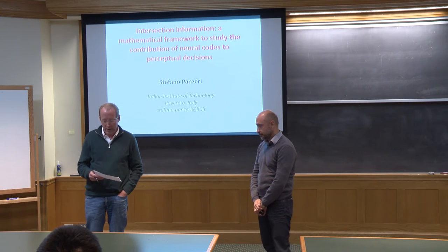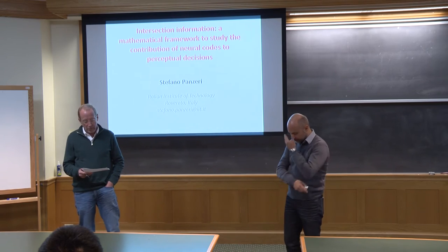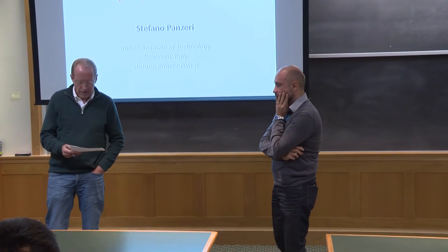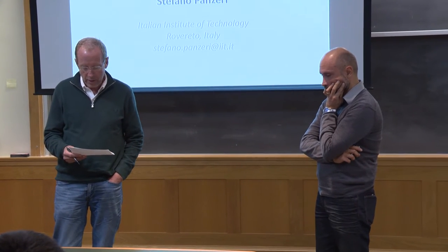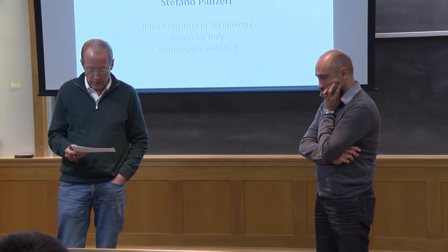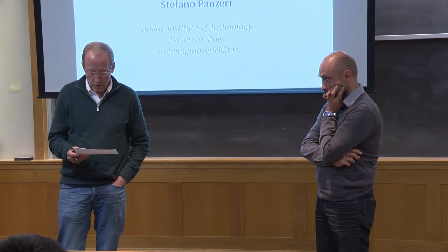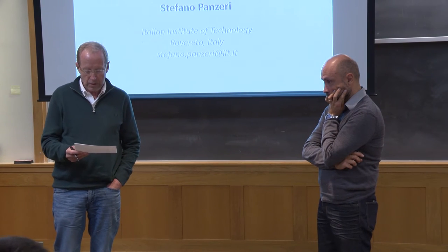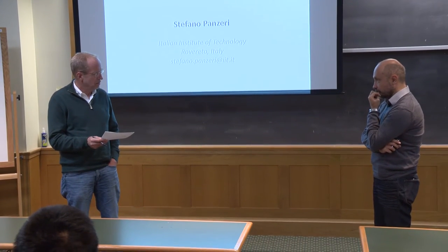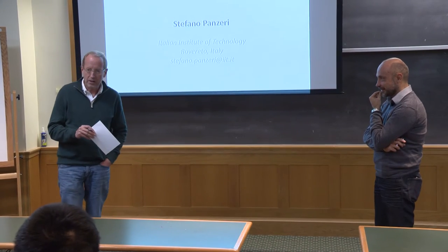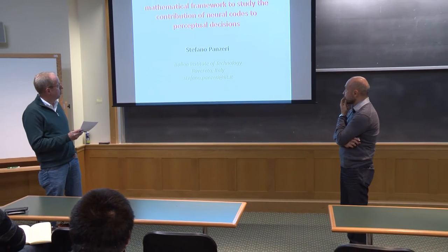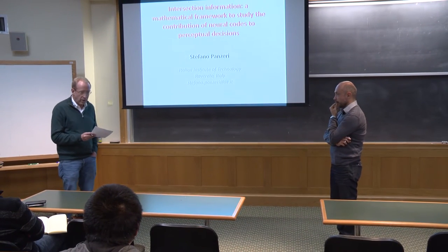It's my pleasure to introduce Stefano Panseri, a theoretical neuroscientist. He got his undergraduate degree in physics at the University of Turin, then a PhD in computational neuroscience in Trieste. He has worked all over the world — Glasgow, Newcastle, Oxford University — and is currently the director of the Center for Neuroscience and Cognitive Systems at the Italian Institute of Technology. He will be talking about a mathematical contribution of neural codes to perceptual decisions.